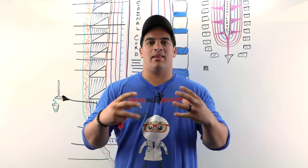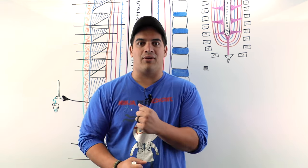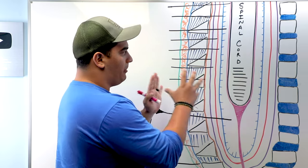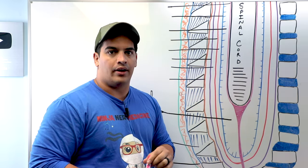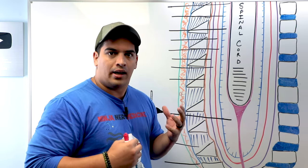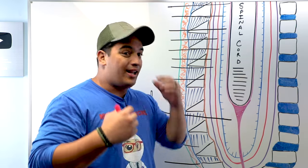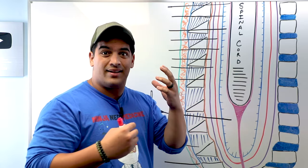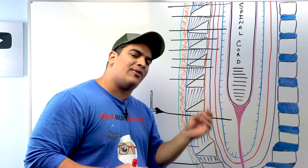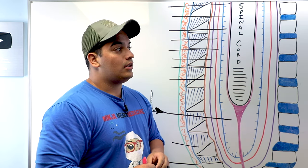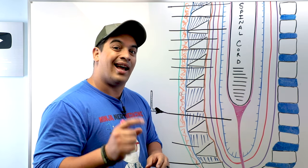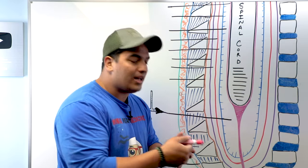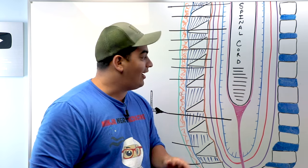Hi Ninja Nerds, in this video we're going to talk about the meningeal coverings of the spinal cord. Let's take a clinical scenario: a patient comes in with a really bad headache, fever, stiffness in their neck, sensitivity to light and sounds, and some confusion lasting about two days. You start thinking this patient may have meningitis. So what is the definitive diagnostic step? A lumbar puncture.